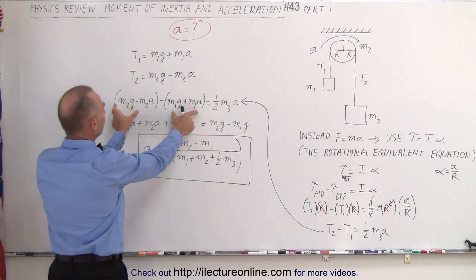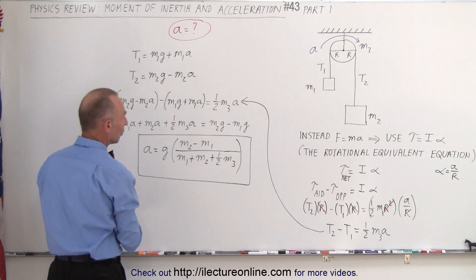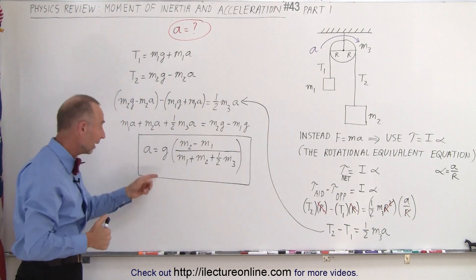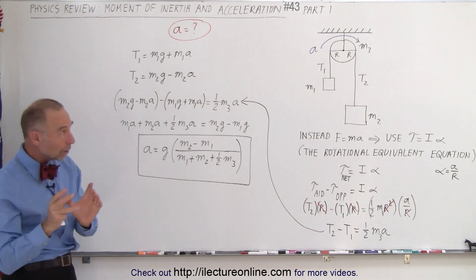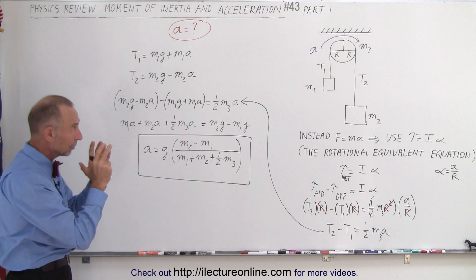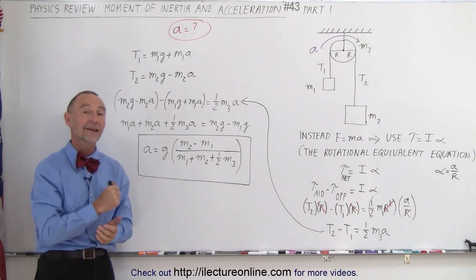So you substitute those two in for T2 and T1, calculate with a little algebra and there's the acceleration for a system when we consider that the pulley does have mass. And that is how it's done.